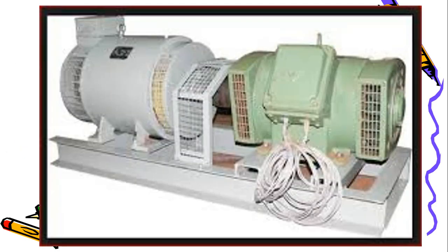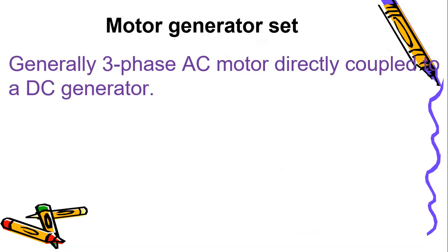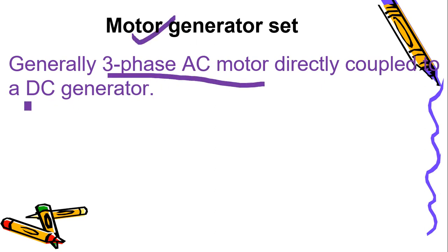This is a figure of a motor generator set. Generally, a three-phase motor will be coupled to a DC generator - that is known as a motor generator set. A three-phase AC motor coupled to a DC generator. It acts as the prime mover for the DC generator, and whenever the DC generator is working it will have a DC EMF induced.